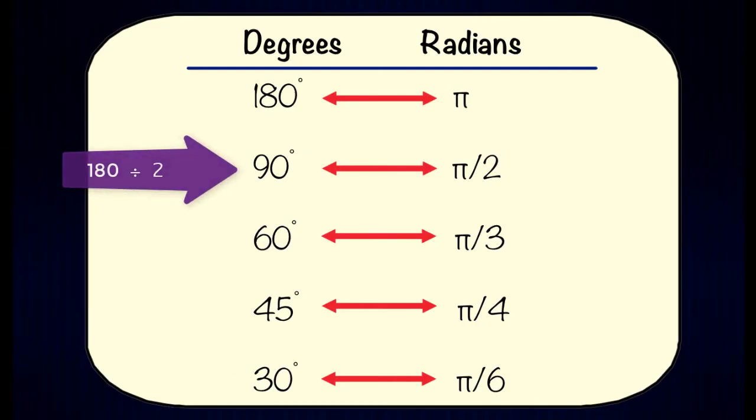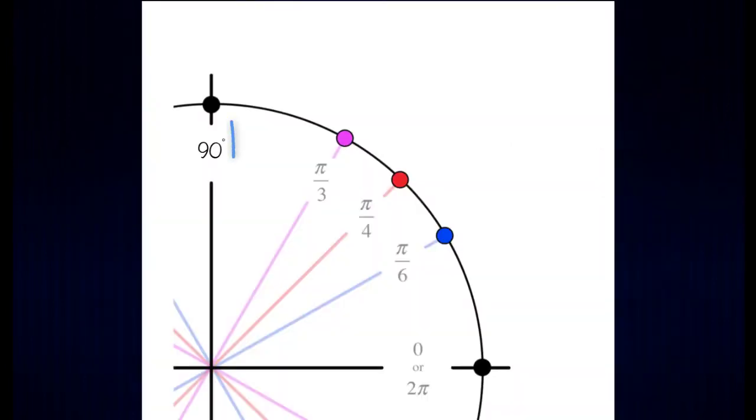And finally if we take 180 degrees divided by two we get 90 degrees. So 90 degrees is equivalent to pi over two radians. And so now we can replace 90 with pi over two.